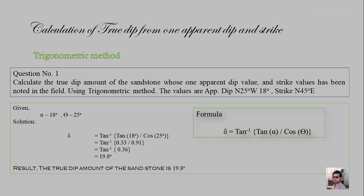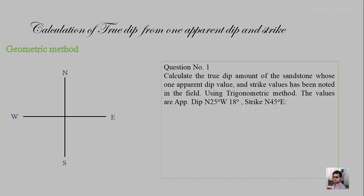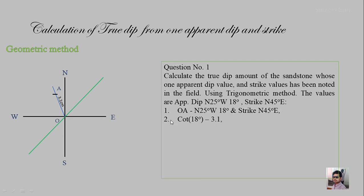We will now do the same using the geometric method to cross-check our answer. The apparent dip is N25°W with a dip amount of 18°, and the strike is N45°E. The first step is to draw OA at N25°W using a protractor, drawing 25° from North. The strike line at N45°E extends in both directions, since strike has two directions while dip has only one. Next, find the length OA, which is the cot of the dip amount: cot 18° = 3.1, so measure 3.1 cm from O and mark point A.